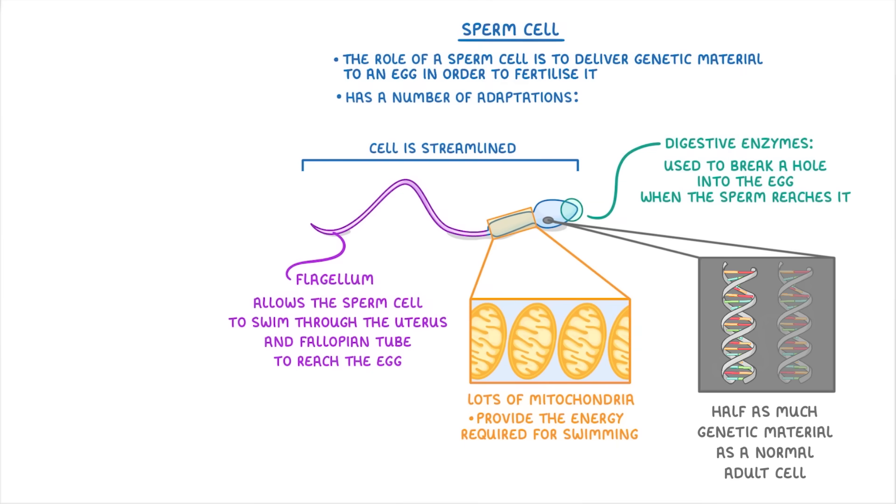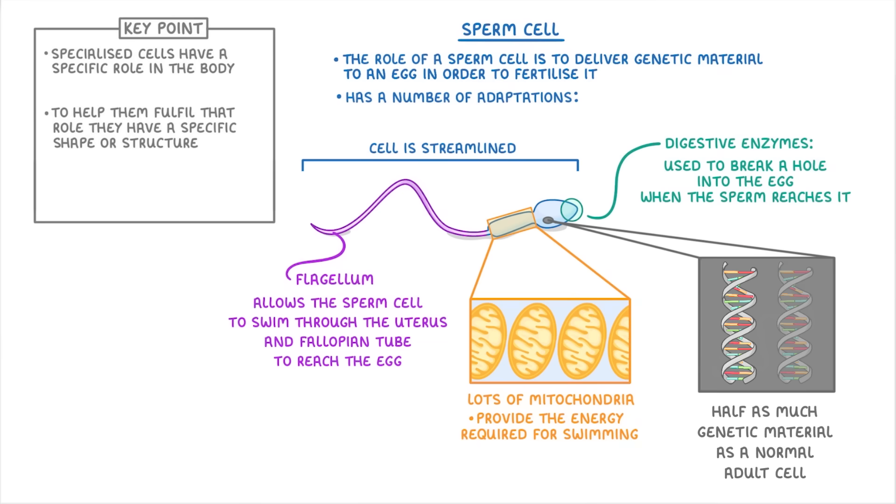So if we take a step back and use this example to think about specialized cells more generally, the key point is that specialized cells have a specific role in the body. And to help them fulfill that role, they generally have a specific shape and structure, and they have specific amounts of different organelles, like mitochondria.